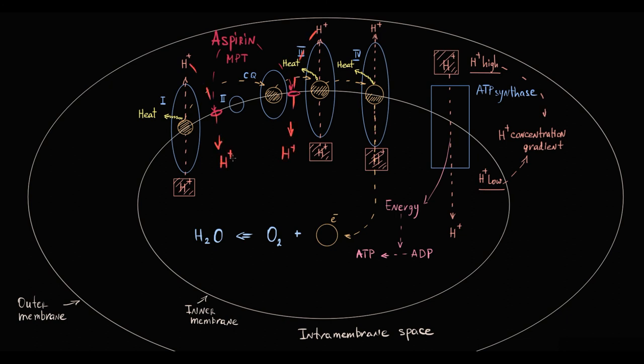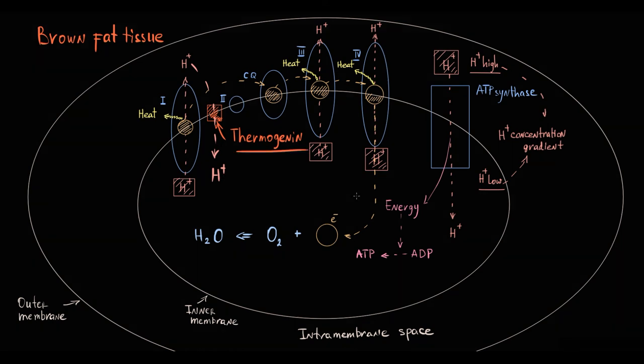In brown fat tissue, physiologically, mitochondria has a specific protein carrier called thermogenin, that can transport hydrogen protons into mitochondrial matrix. So, this one specific protein, that is called thermogenin, provides totally physiological uncoupling of oxidative phosphorylation, that provides enormous heat-generating capacity of brown fat tissue.